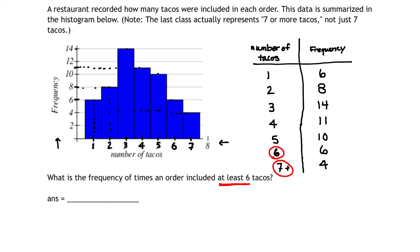What is the frequency of times that the order included at least six tacos? The frequency of times would be read over here on the right side. Right here, six and four. If we want to get the total frequencies, we would just add those two numbers up. Six plus four gives us ten. That's the answer. The frequency of times an order included at least six tacos is ten.